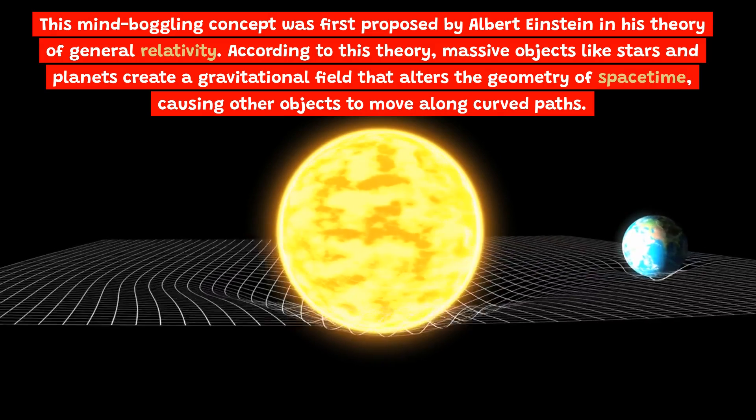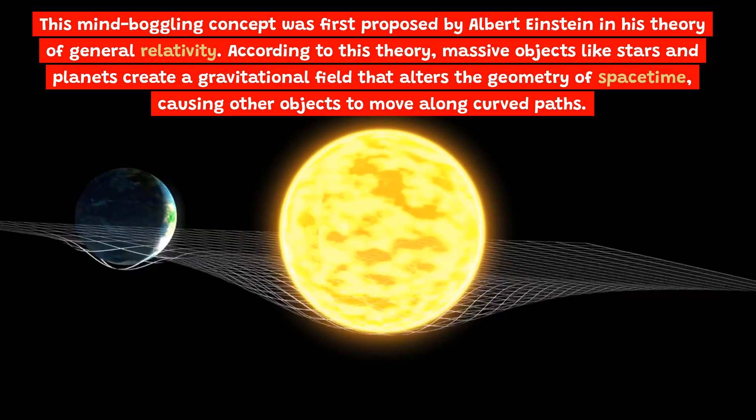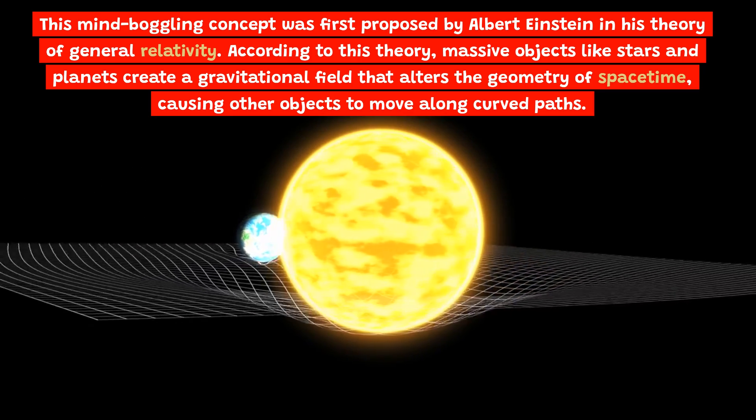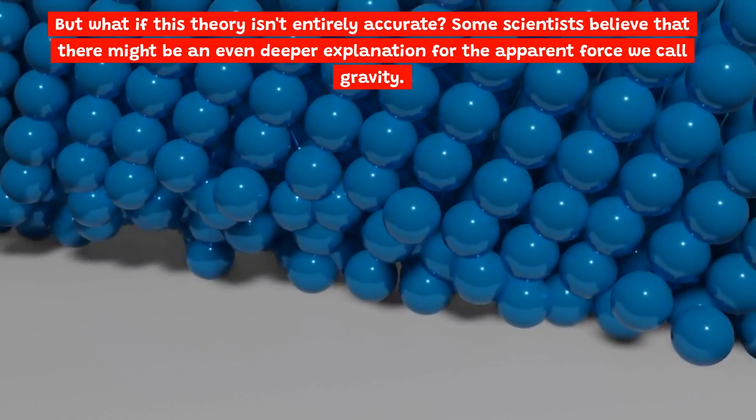According to this theory, massive objects like stars and planets create a gravitational field that alters the geometry of spacetime, causing other objects to move along curved paths. But what if this theory isn't entirely accurate?